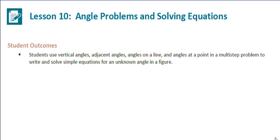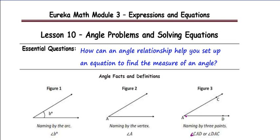This is Mrs. Zappia with Lesson 10 from Module 3, Angle Problems and Solving Equations. Student outcomes from this lesson: students use vertical angles, adjacent angles, angles on a line, and angles at a point in a multi-step problem to write and solve simple equations for an unknown angle in a figure. The essential question for Lesson 10: how can an angle relationship help you set up an equation to find the measure of an angle?